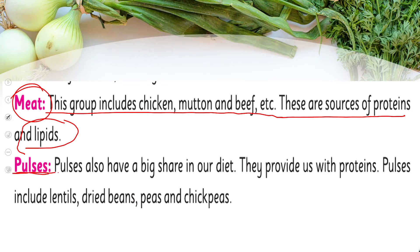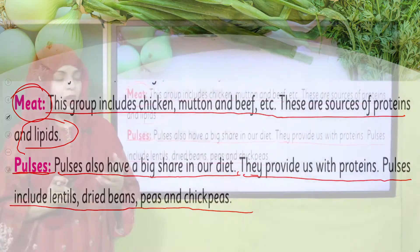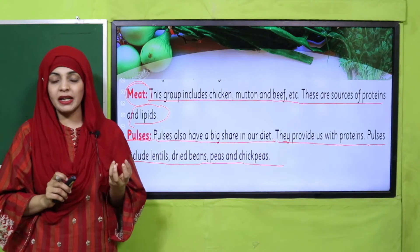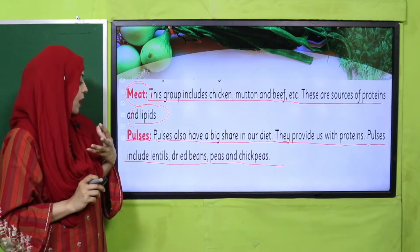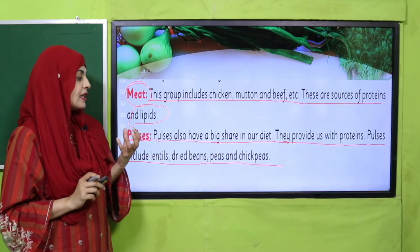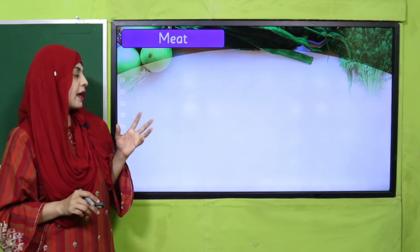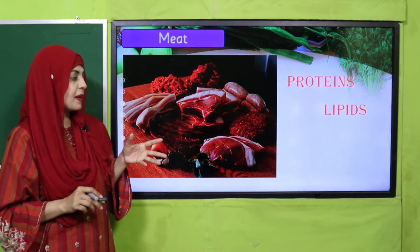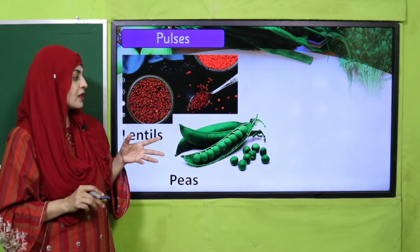Next come pulses, which also have a big share in our diet. They provide us with proteins. Pulses include lentils, dried beans, peas, and chickpeas. Meat provides proteins and lipids, while pulses provide carbohydrates and proteins — both are very important for our body.